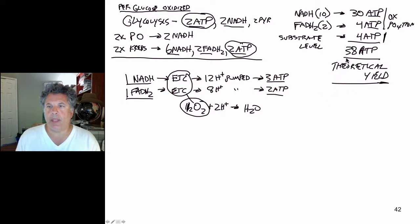First of all, this is the theoretical yield for prokaryotes, bacteria, but the theoretical yield for eukaryotes actually is different.